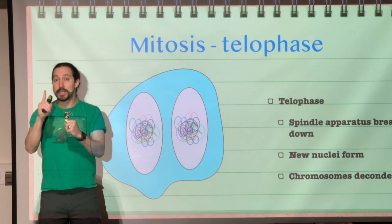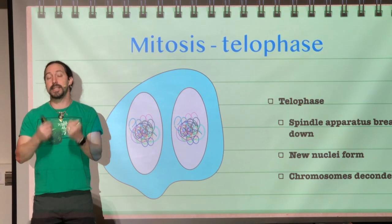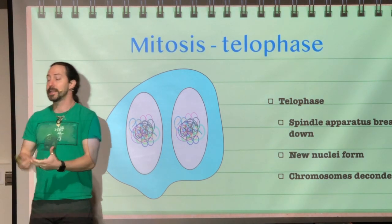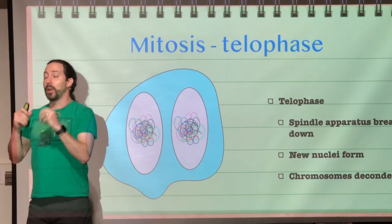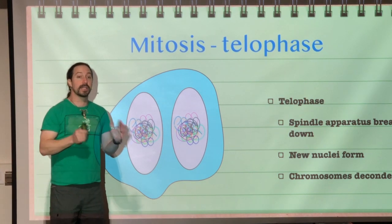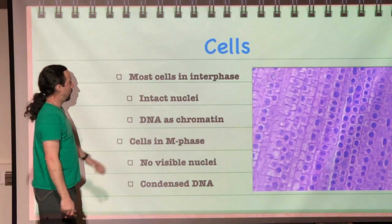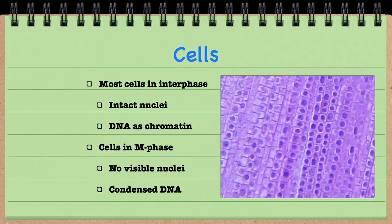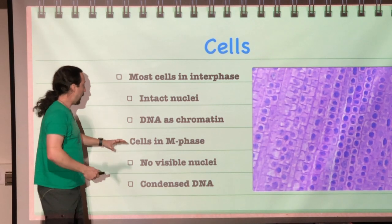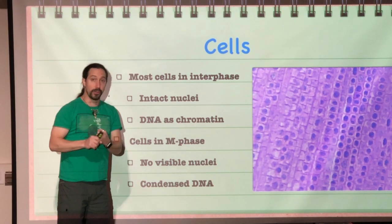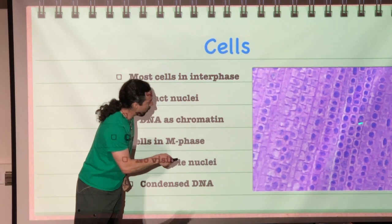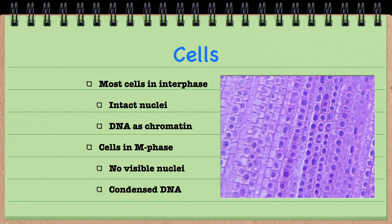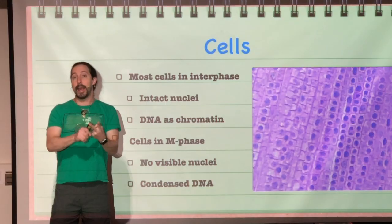At the end of mitosis, we have one cell with two nuclei in it. The reason for that is because mitosis is the process of karyokinesis — the process of replicating our nucleus. That's the actual definition of mitosis; we don't have two cells at the end of mitosis. Looking at an actual slide of cells, most cells are in interphase — you can see the nucleus and chromatin present. But some cells are in M phase with no visible nuclei and condensed DNA. Some of those would be in anaphase, with chromosomes being pulled apart, while the vast majority are in interphase going through Gap 1, S, or Gap 2.